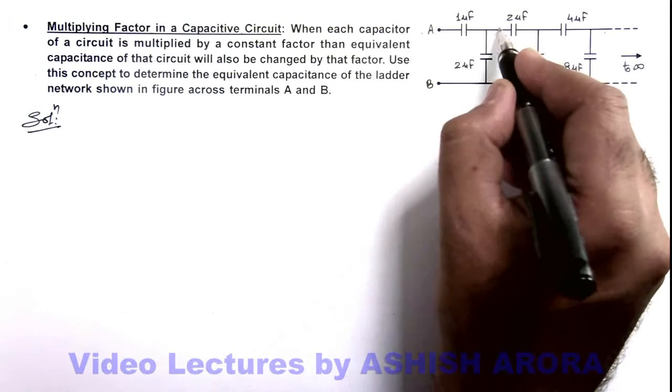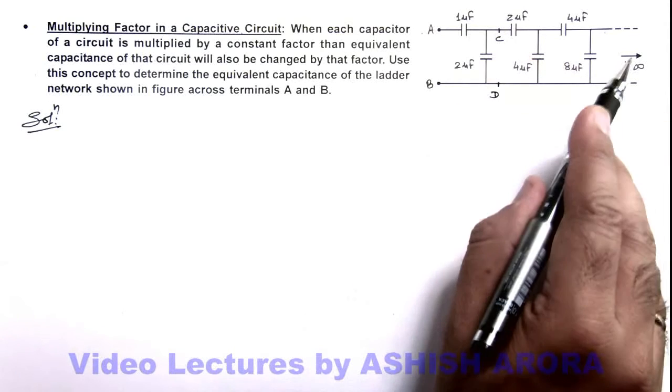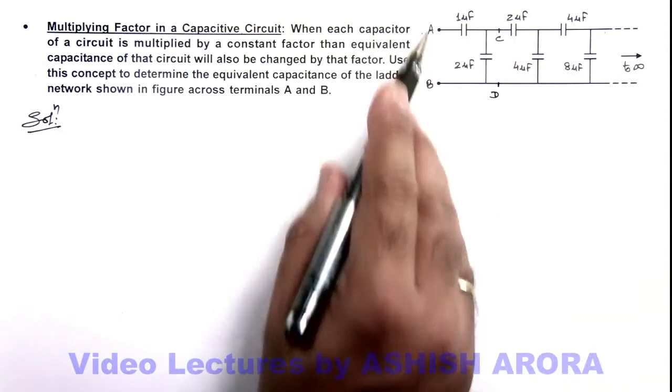So if we consider two terminals C and D here, then the capacitance after C and D will be twice the capacitance of the ladder network across terminals A and B.